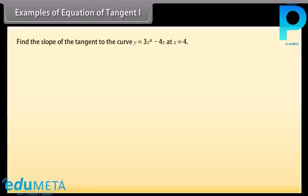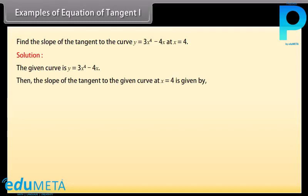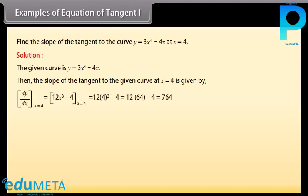Example: Find the slope of the tangent to the curve Y = 3X⁴ − 4X at X = 4. Solution: The given curve is Y = 3X⁴ − 4X. The slope of the tangent at X = 4 is given by dY/dX at X = 4, which equals 12X³ − 4 at X = 4, which equals 12 × 4³ − 4, which can be solved to 764.